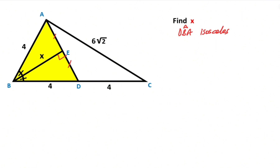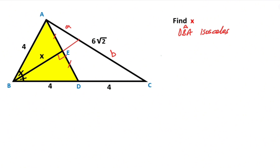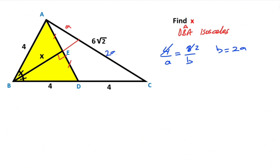If we extend point E like this, and let's call here A and this part let's call B. According to the angle bisector theorem, 4 plus A must be equal to 8 plus B. Therefore, if you simplify the expression, that means B is equal to A.